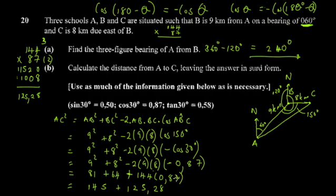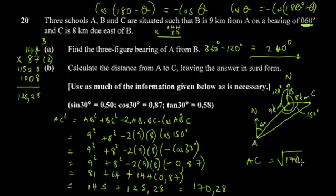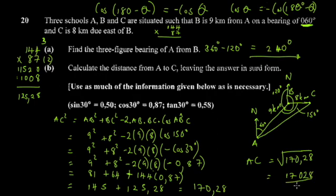So AC = √170.28. You're asked to leave the answer in surd form. We can write this as √(17028/100), which equals √17028 divided by 10. Now we need to express √17028 in simplified surd form by finding the prime factorization of 17028.